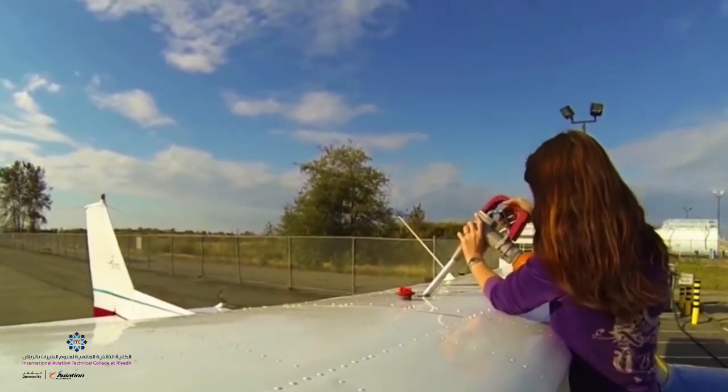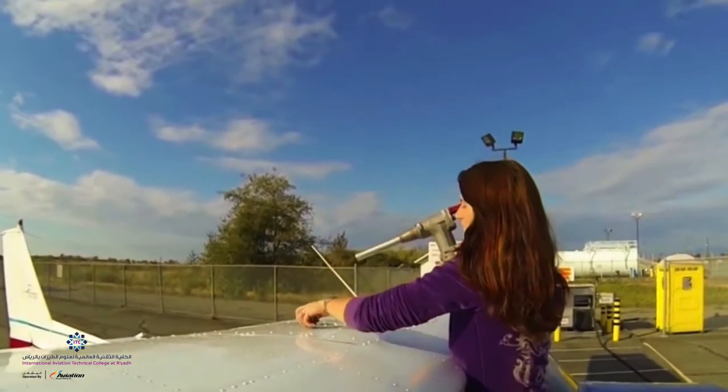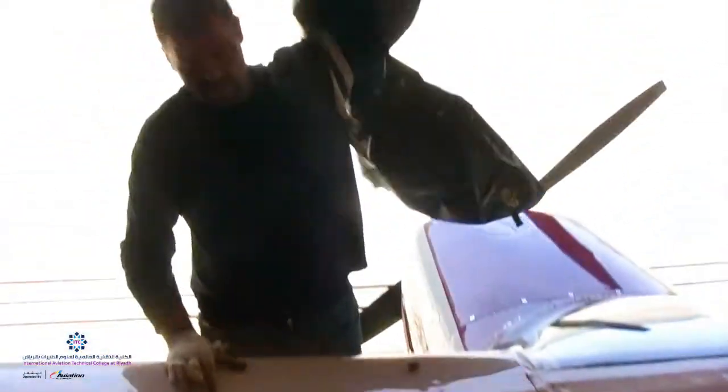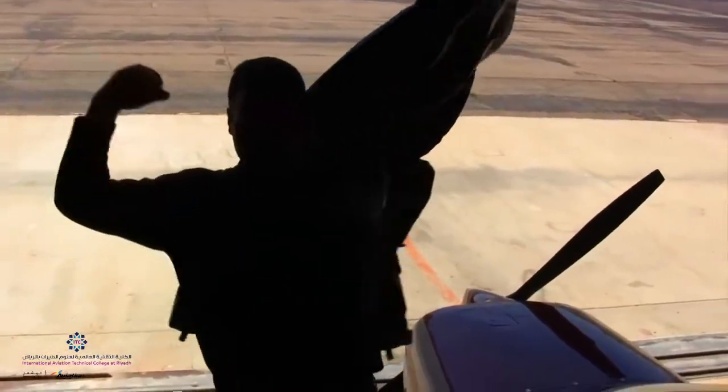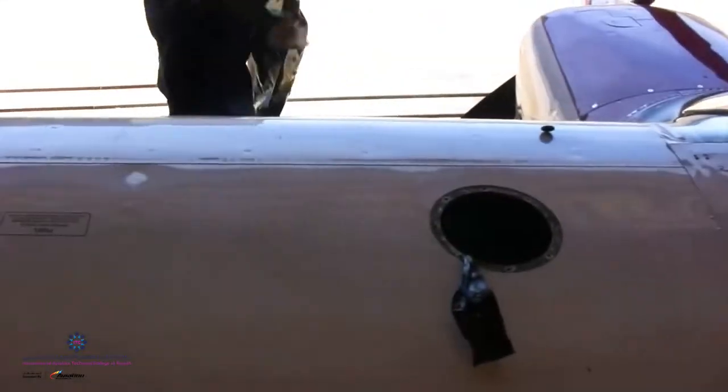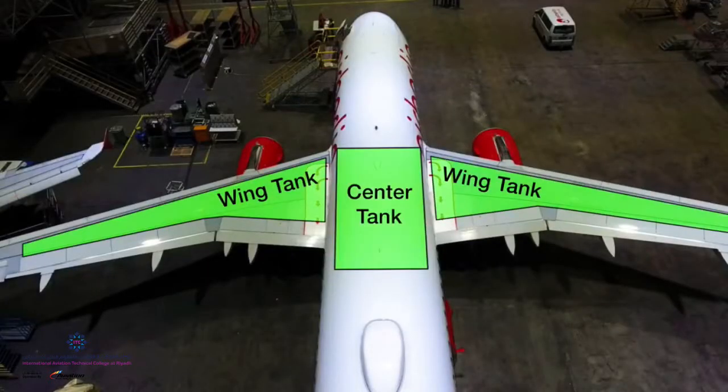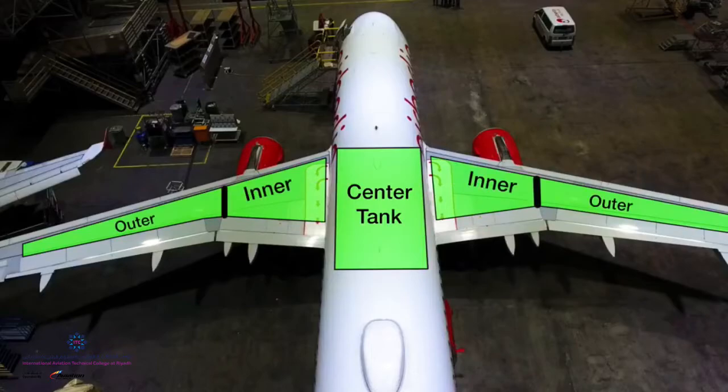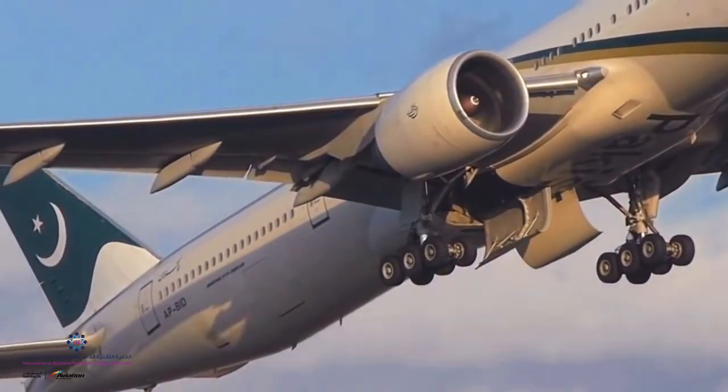Rigid tanks are mostly in use on small general aviation aircraft, whereas the flexible or bladder-type tanks are common to small high-performance airplanes, including military planes and some turboprops. Integral fuel tanks are sealed into large turbine-engine aircraft wings, such as the airliners. The system is also called the wet wing.